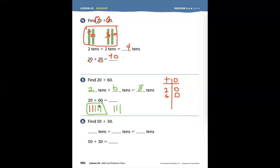So 20 plus 60, what I need to do is count by tens. Each stick has a value of 10. Let's count them. 10, 20, 30, 40, 50, 60, 70, 80. My total is 80.